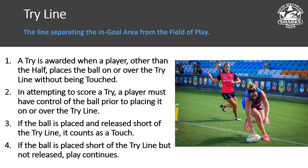If the ball is placed and released short of the try line, it counts as a touch. If it's the fifth touch, that's a changeover on six. Any other time, they come back to the seven metres and roll the ball on whatever touch count that would be — so if they put it down on touch three, they roll the ball on touch four.